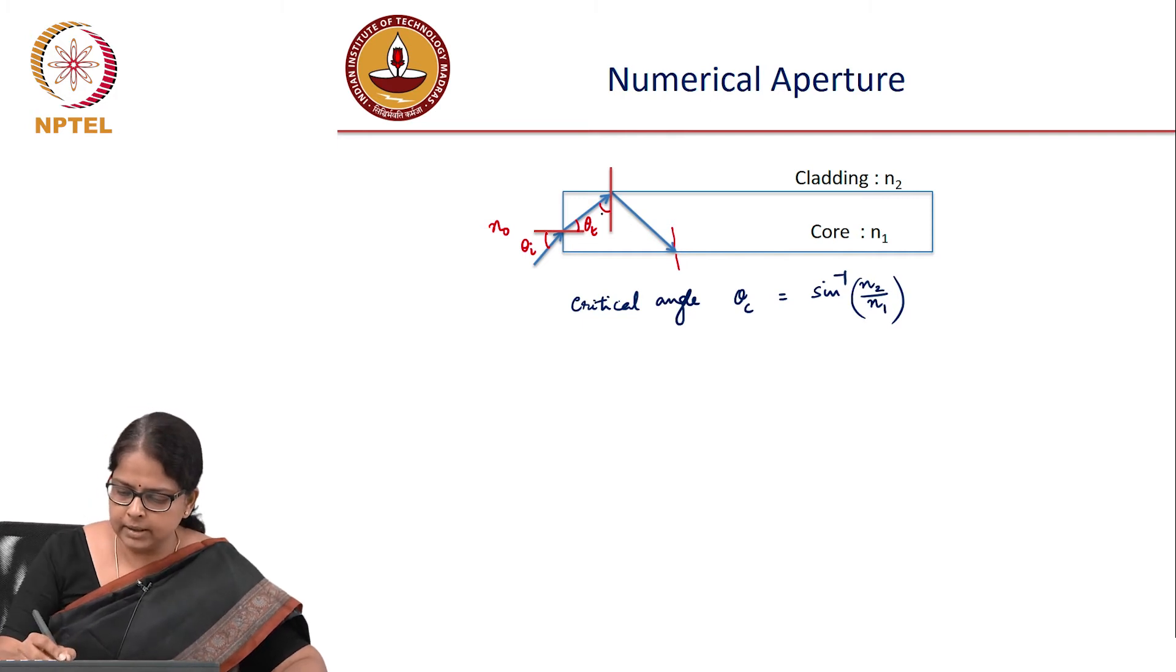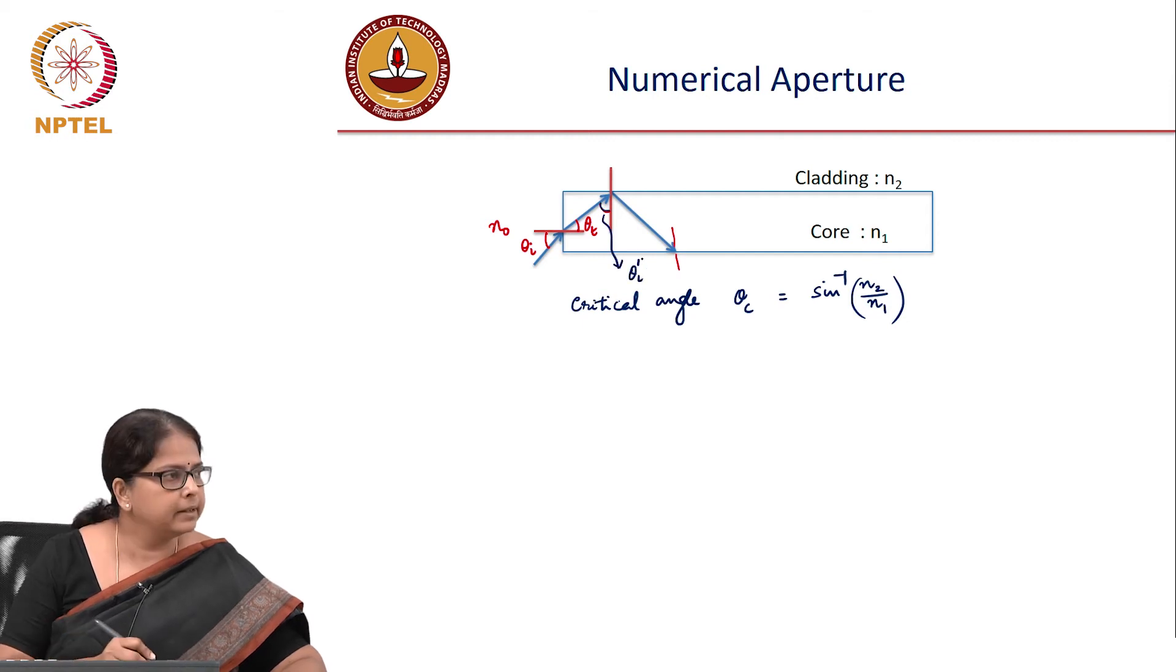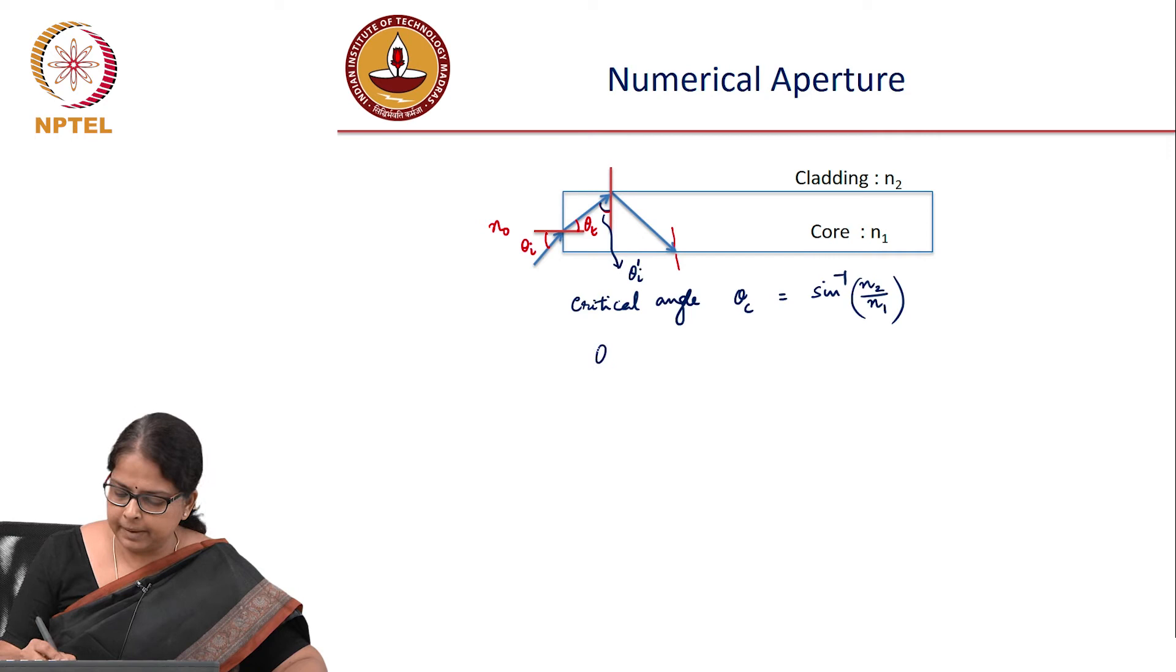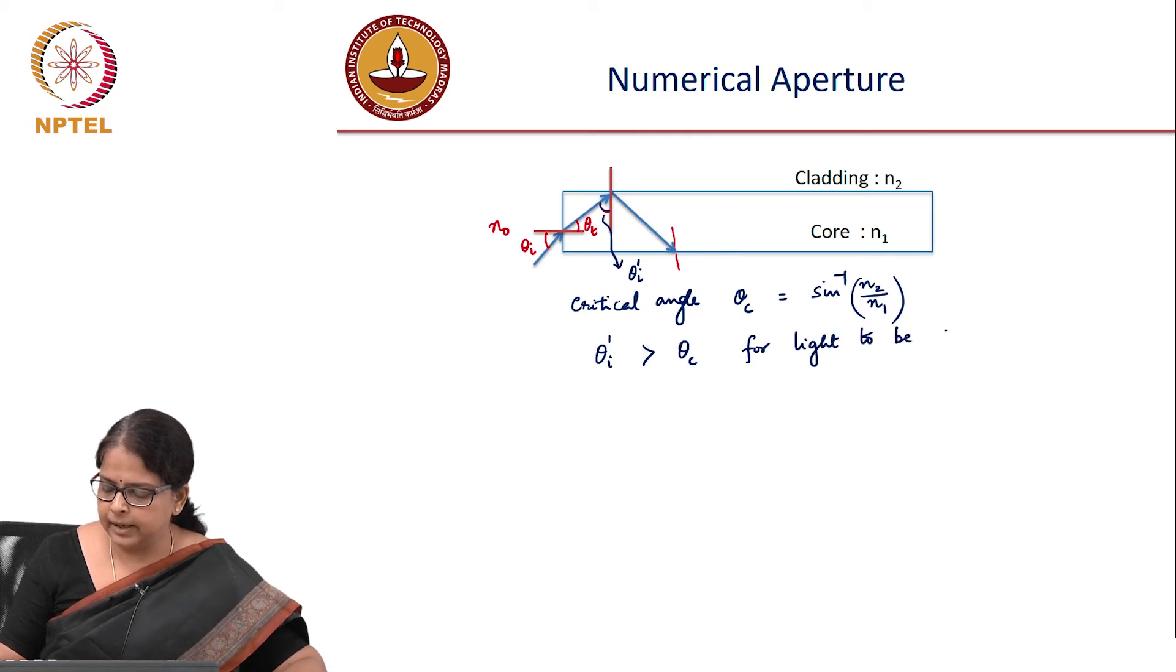We want the angle of incidence at the core-cladding interface—let's call it θᵢ'. This θᵢ' must be greater than the critical angle for light to be guided, which means θₜ must be less than 90° minus θc.